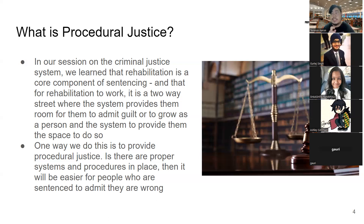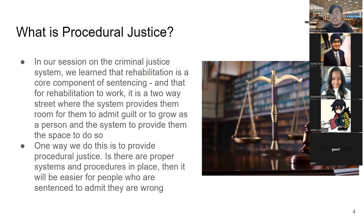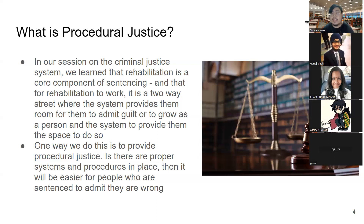It's a two-way system: the system has to provide it and the individual has to admit the guilt. One way you create that environment is through procedural justice — getting people to understand there are systems and procedures in place. When people feel things are fair and they know how the system works, it's easier to accept punishment because they could have calculated this before committing the crime.